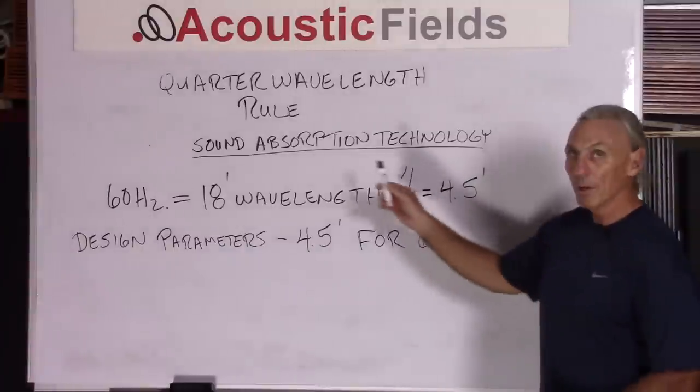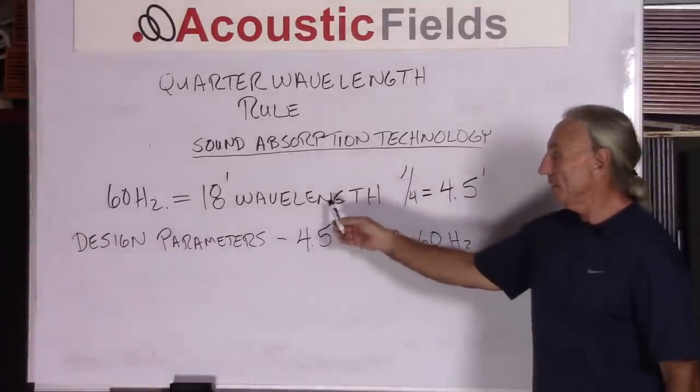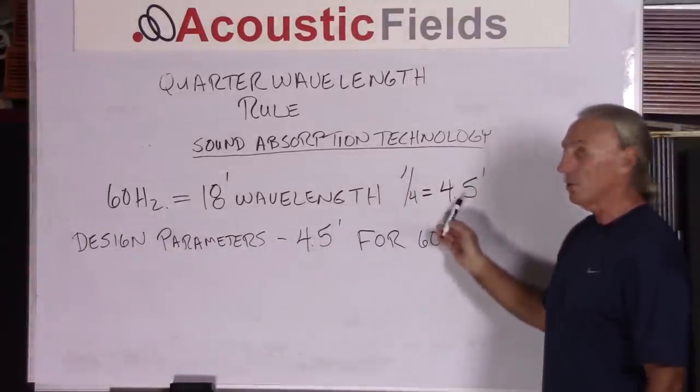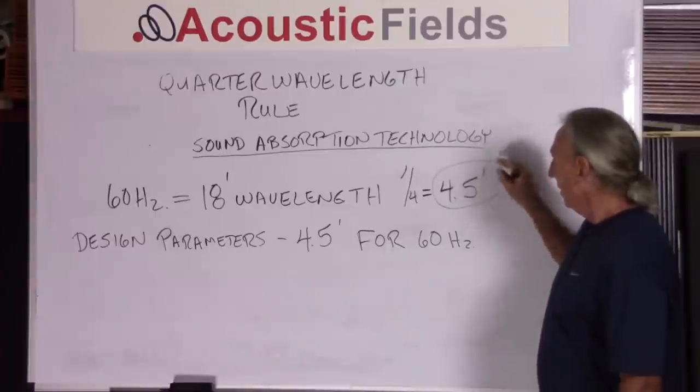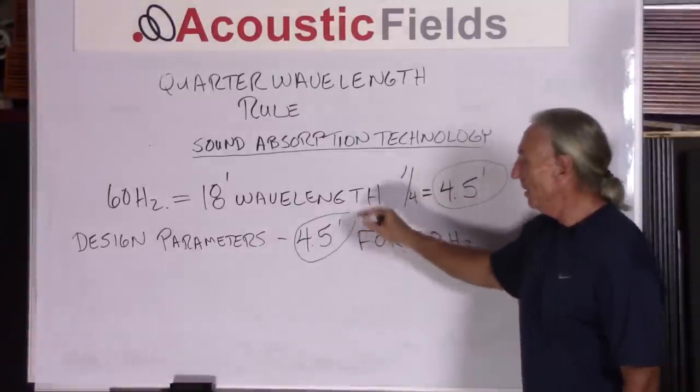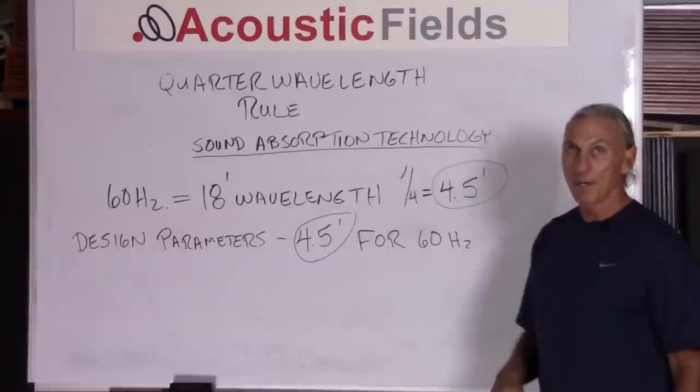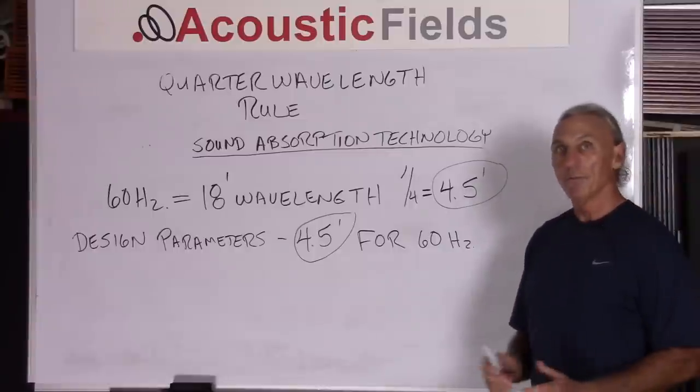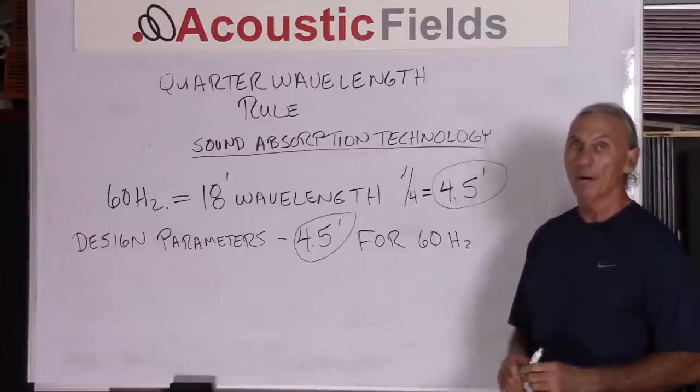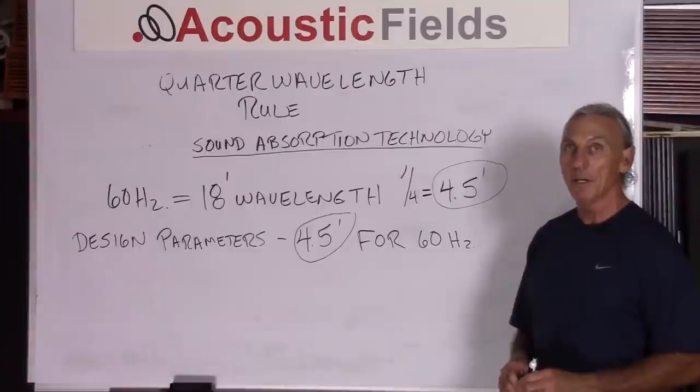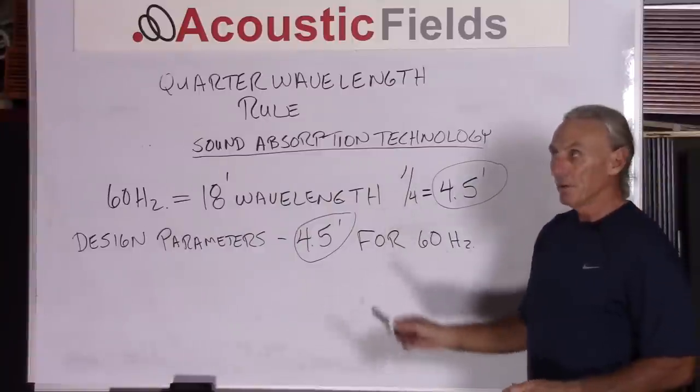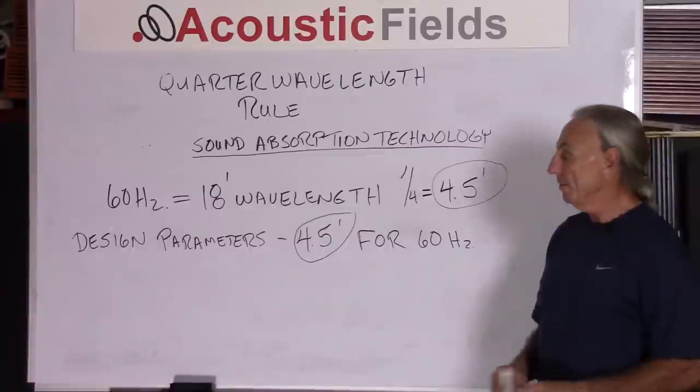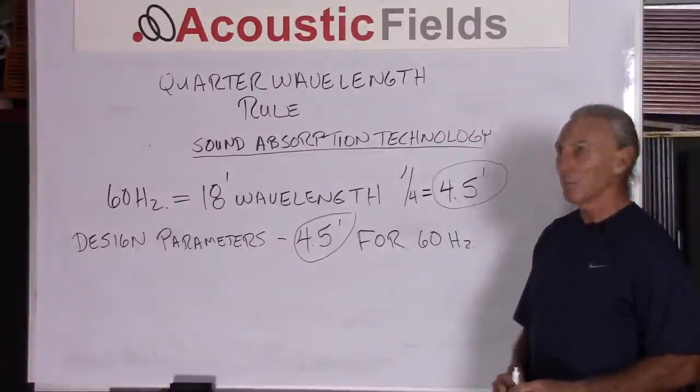So when we're looking at designing for low-frequency energy, we know that 60 cycles is 18 foot long, quarter wavelength is our target. So how do we get this 4.5 feet of sound absorption in our technology, in our products of today? Well, we'll save that discussion for another video because this centers on a lot of the misperceptions and conceptions in the room acoustic product industry. So we'll deal with those in a separate video. But this is something that you have to understand when it comes to quarter wavelength rule, that when we design low-frequency products, we have to keep quarter wavelength rule in mind.